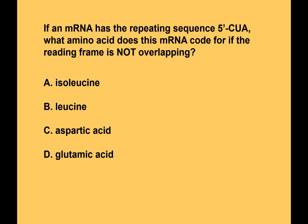Here's another one. Figure out: if an mRNA has the repeating sequence CUA, going five prime CUA, CUA, CUA — what amino acid does this mRNA code for if the reading frame is not overlapping? So that means you're keeping your three reading frames. If you look that up, the answer is leucine.